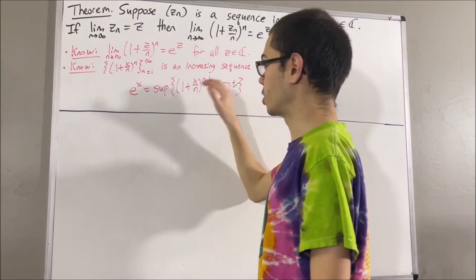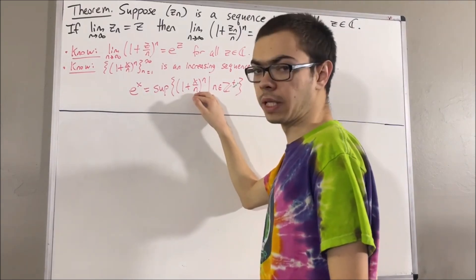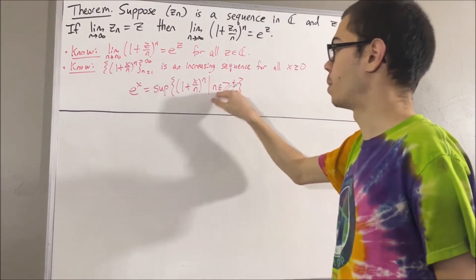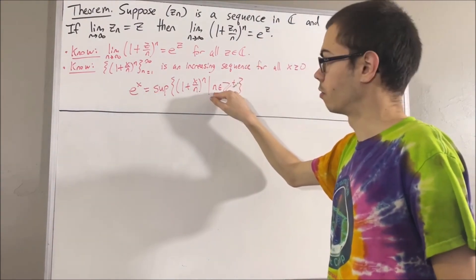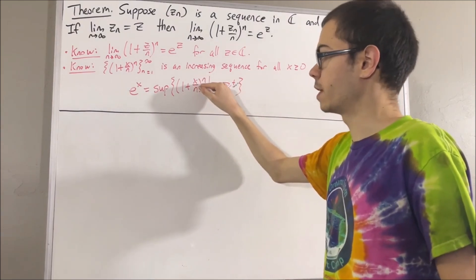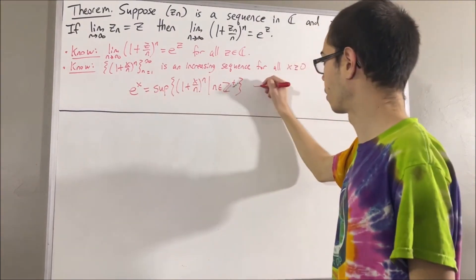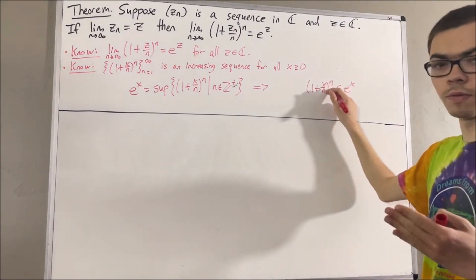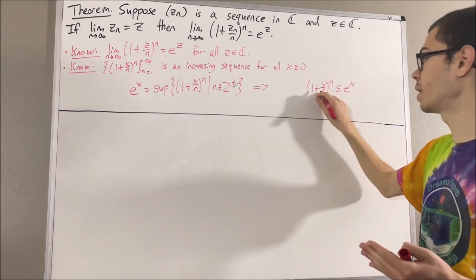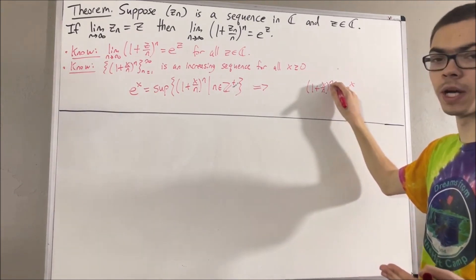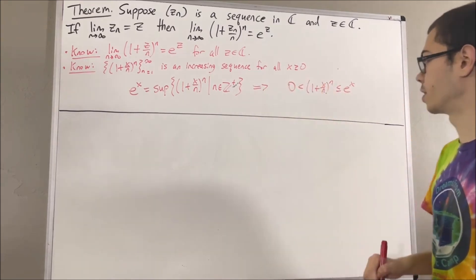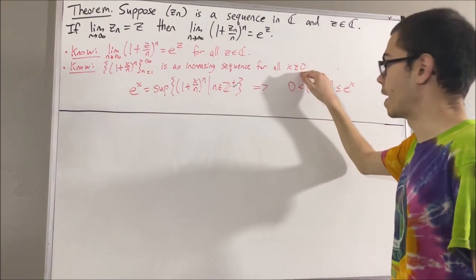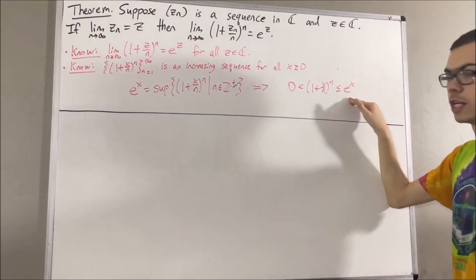We know that every term of the sequence will therefore be less than or equal to e to the x. So if we consider an arbitrary positive integer n, then 1 plus x over n to the power of n is less than or equal to e to the x. And we know that 1 plus x over n is greater than zero. If we raise any positive real number to the power of a positive integer, that will still be greater than zero. So for any real number x greater than or equal to zero and any positive integer n, we have this inequality.